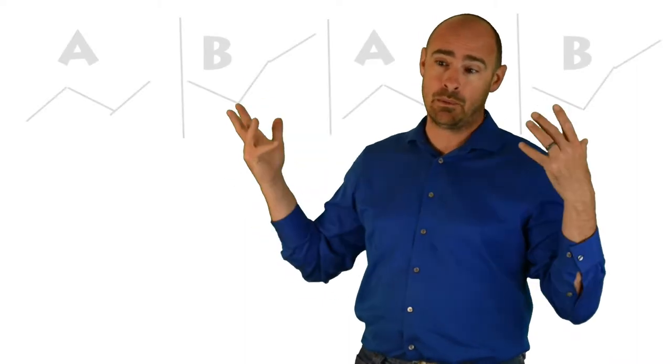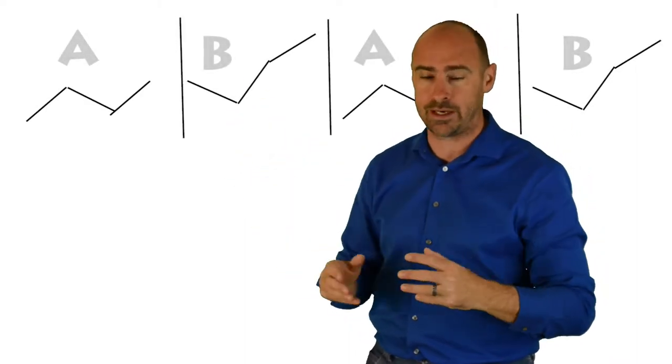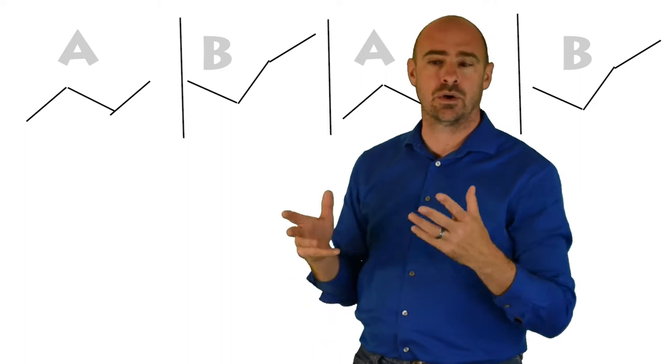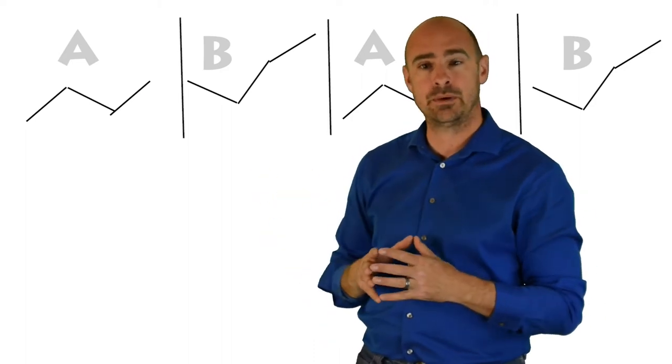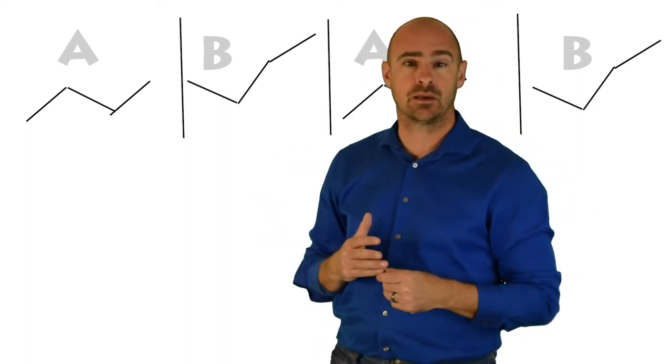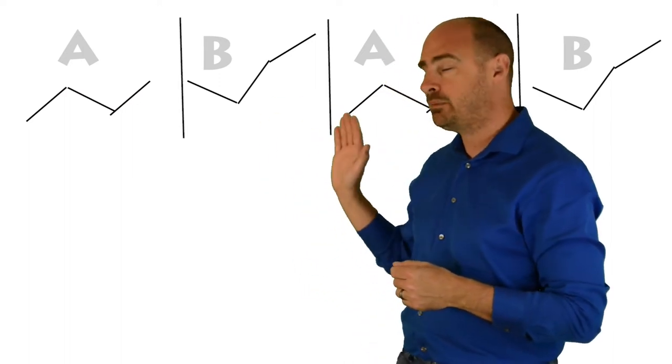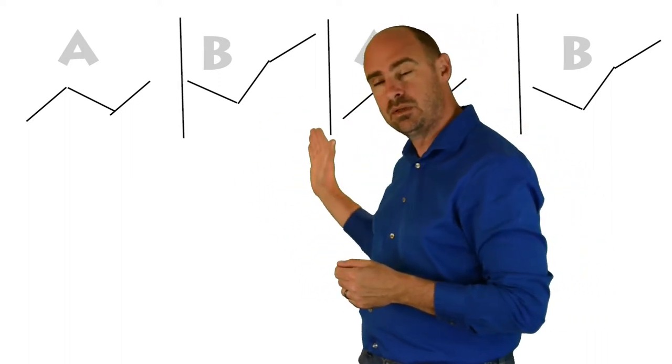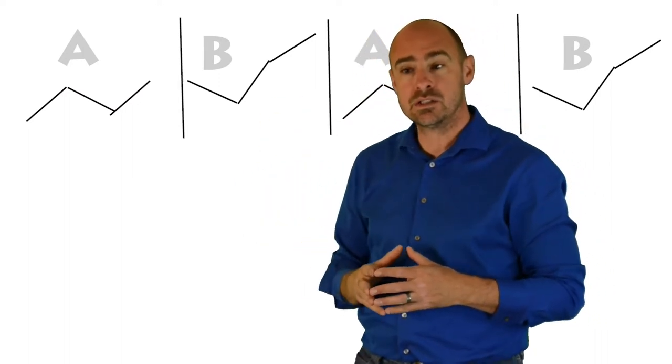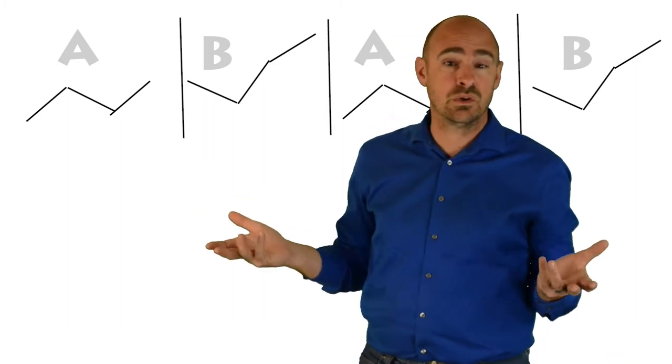And then we put that intervention back in place. So we do our A, B, and we go, wow, we got results. And we do another A, and it's like, hey, it's working. The behavior is going down or going up, whatever it is that was happening. And then you put your intervention back in place. As long as those things happen all at the same time, like, as they seem to be related to the phase changes, then we draw the conclusions that these things work.